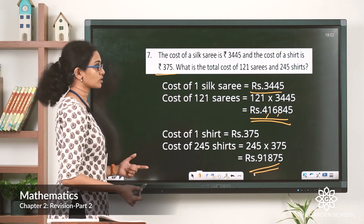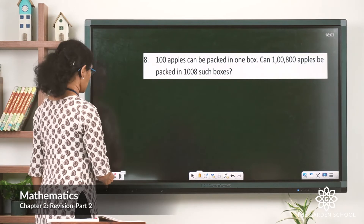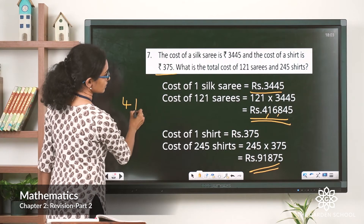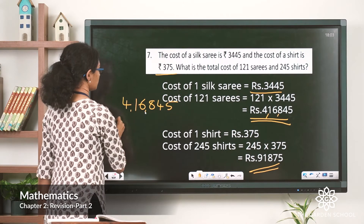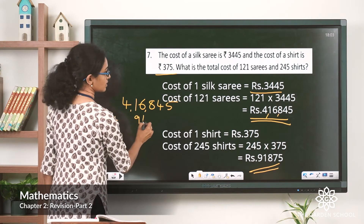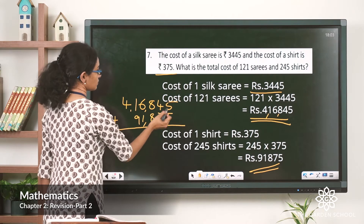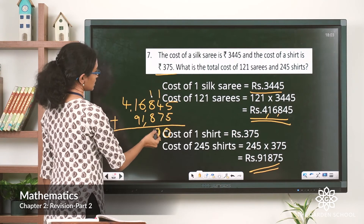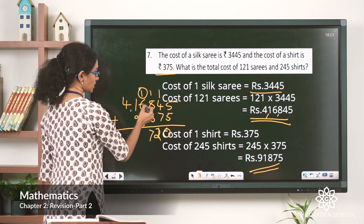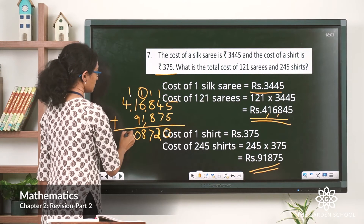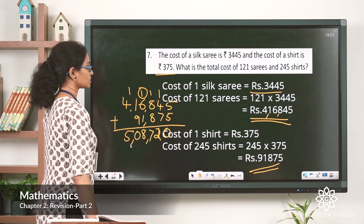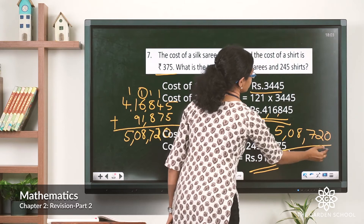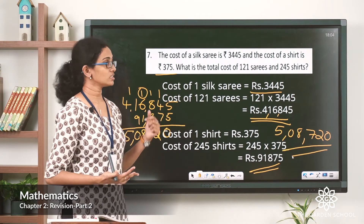Now we need the total cost of the sarees and shirts together, so we add the two products: 4,16,845 plus 91,875. Adding step by step — 5 plus 5 is 10, carry 1; 7 plus 4 is 11 plus 1 is 12, carry 1; 8 plus 8 is 16 plus 1 is 17, carry 1; 6 plus 1 is 7, plus 1 is 8; and 4 plus 1 is 5. The total cost is rupees 5,08,720 for 121 sarees and 245 shirts.